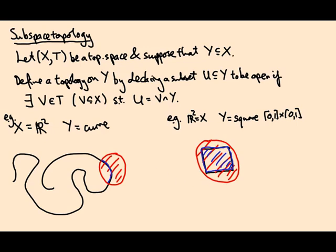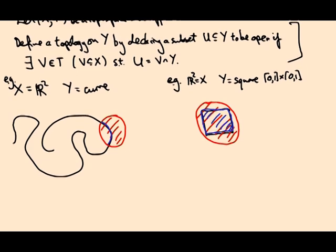So by definition, that whole square — despite the fact it looks very closed — is an open set. I should stress it's an open set in the subspace topology on Y; it's not an open set in the plane. Those are just two different topological spaces. I'll leave it to you to check that this definition actually gives a topology meeting the required axioms.